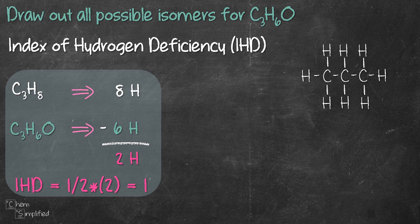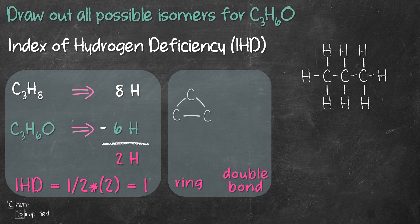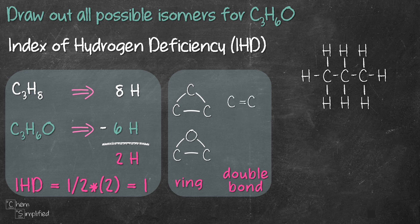An IHD of 1 means C3H6O has 1 ring or 1 double bond. The ring can be a cyclic compound containing all carbons, or since we have an oxygen, it could be a ring containing oxygen inside the ring. The double bond can be between 2 carbons (a C=C), or it can be between carbon and oxygen (a C=O), since we have oxygen in this formula. Since we're dealing with only 1 oxygen atom, it'll be helpful to recall all functional groups that have 1 oxygen before we continue.